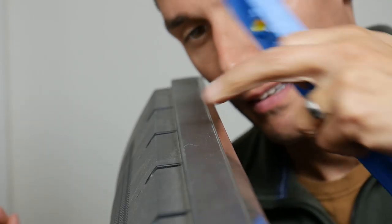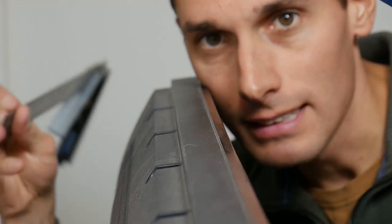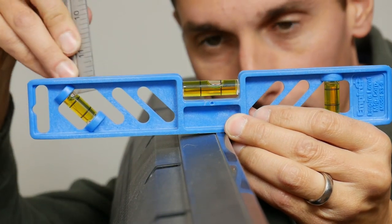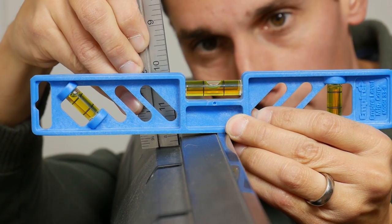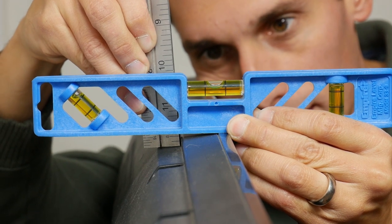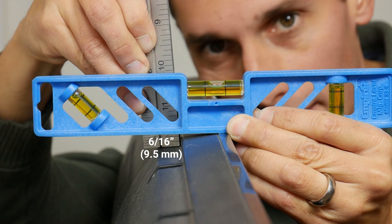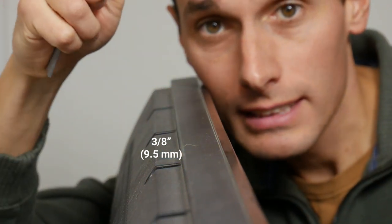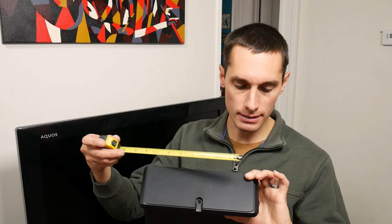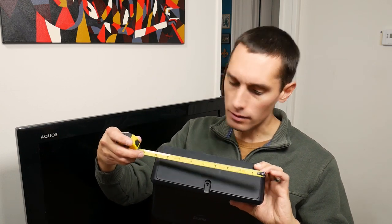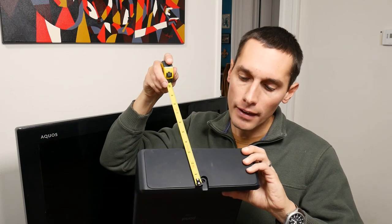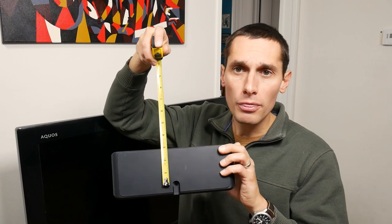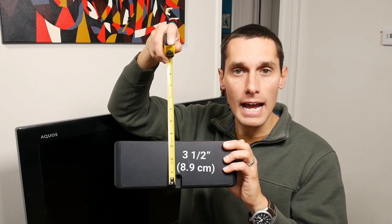All right, and to get the depth of that notch, I'm going to use a level and a ruler here, and it looks like it is six sixteenths to three eighths of an inch deep. All right, now I'm going to measure the base of the device itself. The length looks like it's about eight and three quarters inches, and then the short distance is about three and a quarter, maybe three and a half or so. So let's go draw this out because that's always helpful to me to visualize everything.